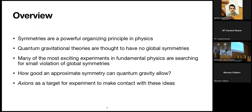Somehow there are lots of very good approximate symmetries, and many of the most exciting experiments happening are based on searching for small violations of approximate symmetries. A question that arises is: how good an approximate symmetry can quantum gravity allow? I want to talk about some aspects of that question, and in particular toward the end of the talk about axions as a particularly good target for experiments to make contact with ideas emerging from quantum gravity.